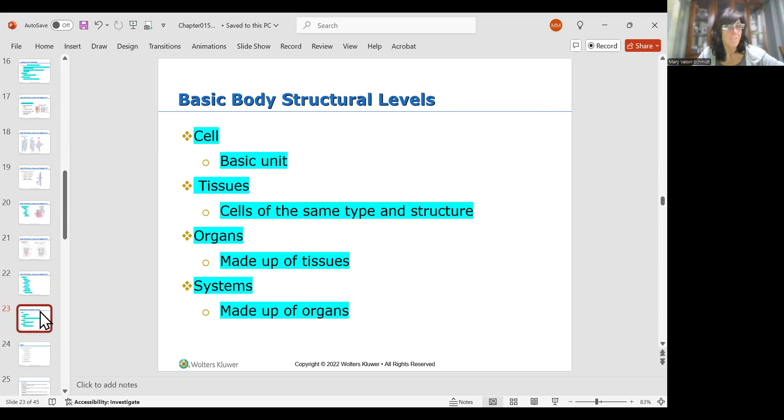And that's it for body directions. We're going to move on to the cell now. It's getting into some good stuff. So the cell is the smallest basic unit of the body that's alive. When you put cells together, they form tissues, and tissues are made from cells of the same type and structure. Organs are formed when tissues come together, and systems are made up of organs. Sounds pretty self-explanatory.